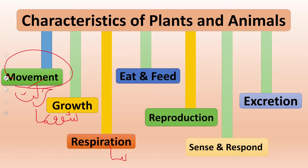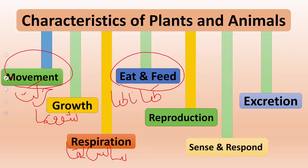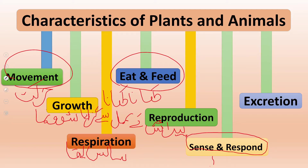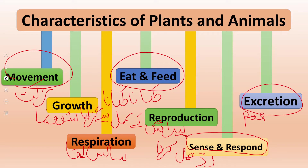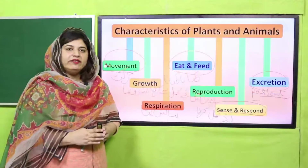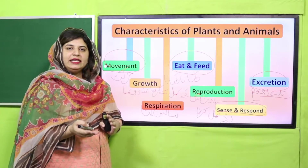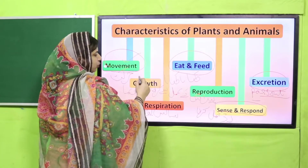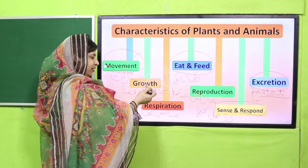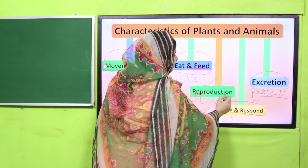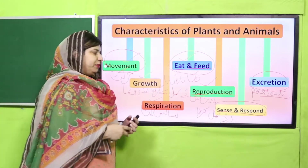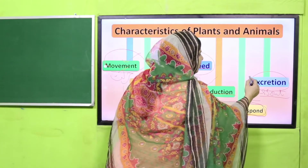All living organisms can move, grow, and breathe — tamam jandar sans lete hain. They also eat and feed, and they reproduce. Aaj hum yeh padh chuke hain: how they move, how they grow, how plants and animals respire, how plants and animals eat and feed, and how plants and animals reproduce. In today's lesson we are going to compare how plants and animals sense and respond, and how plants and animals excrete.